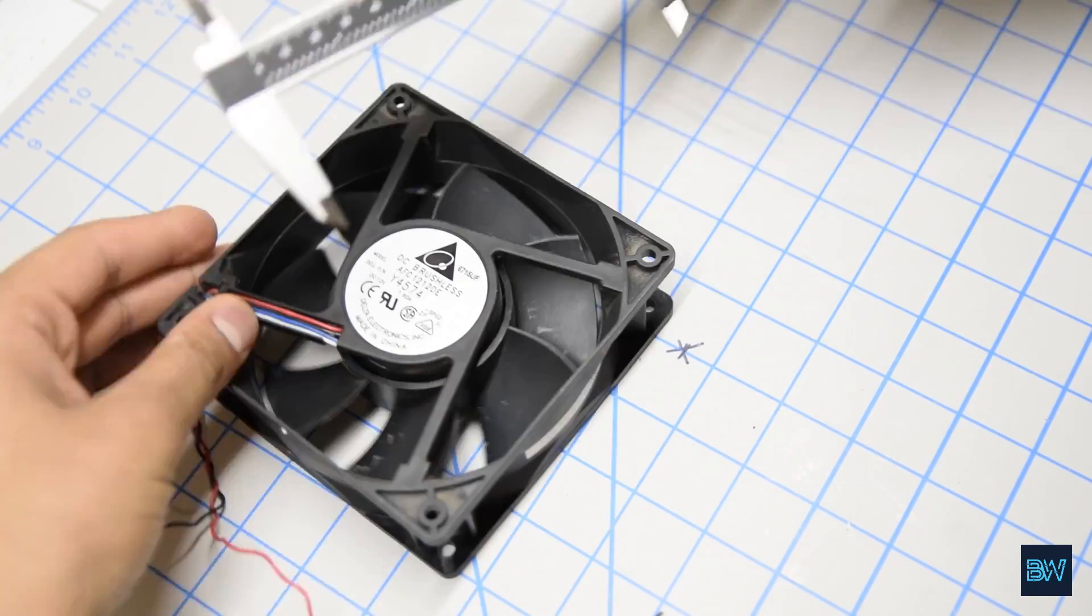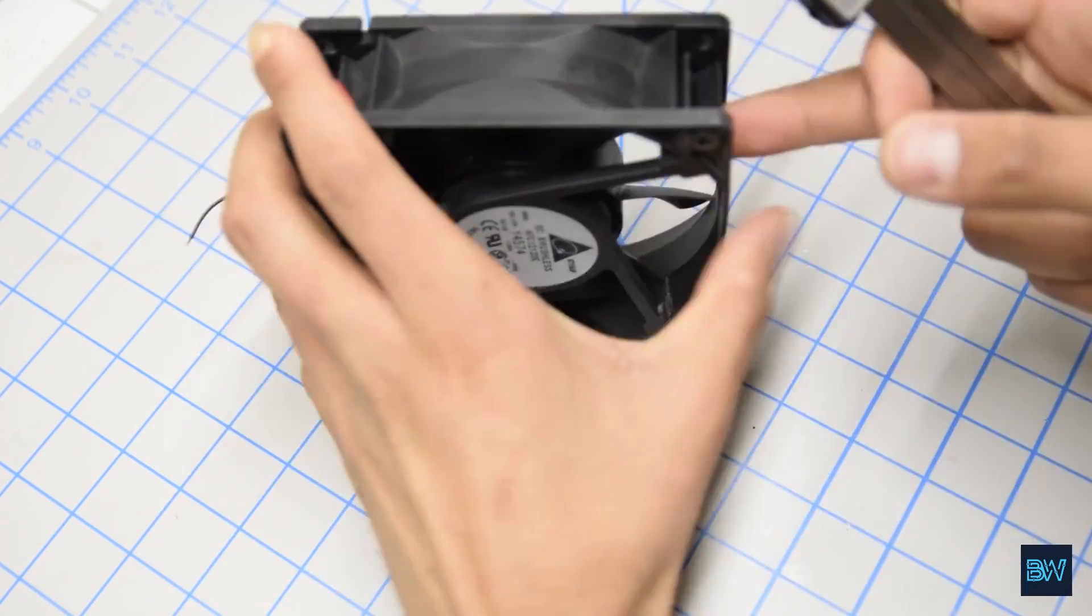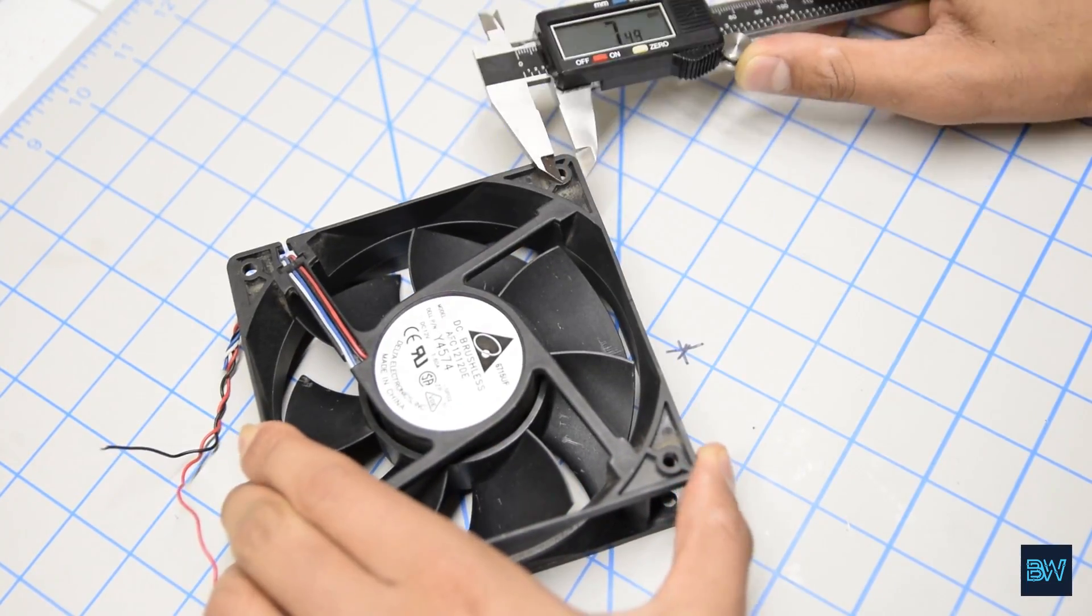The first step is to design the laser-cut housing, and for that I took measurements of all the things the housing will interact with.